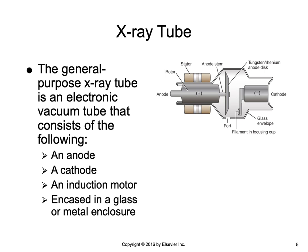The general purpose x-ray tube is an electronic vacuum tube and it consists of an anode, a cathode, and an induction motor, encased in a glass or metal enclosure called the glass envelope. The anode is the positive end of the tube and the cathode is the negative end. The anode incorporates an anode target and an induction motor, half of which is inside and half outside of the glass envelope. The cathode consists of the focusing cup and filament with supporting wires.